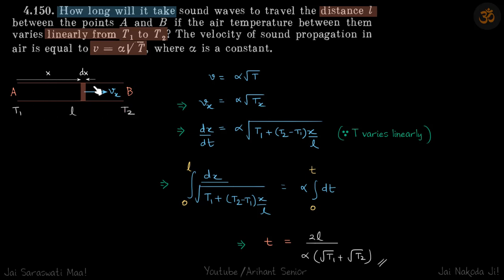temperature at a distance x will be T1 plus (T2 minus T1) times x by L. And Vx can be written as dx by dt. So we'll take similar terms on one side and then we'll integrate x from 0 to L